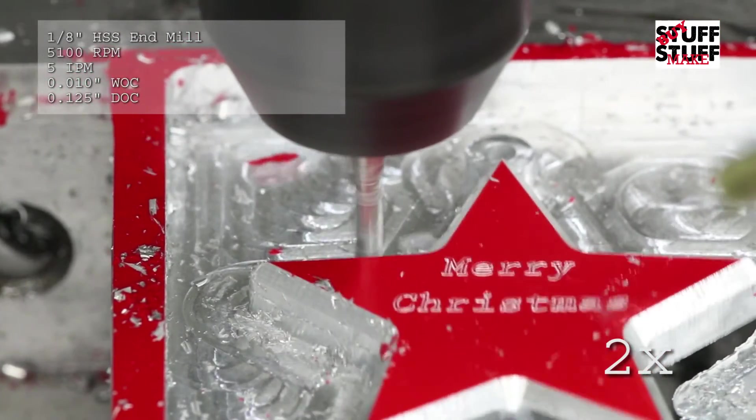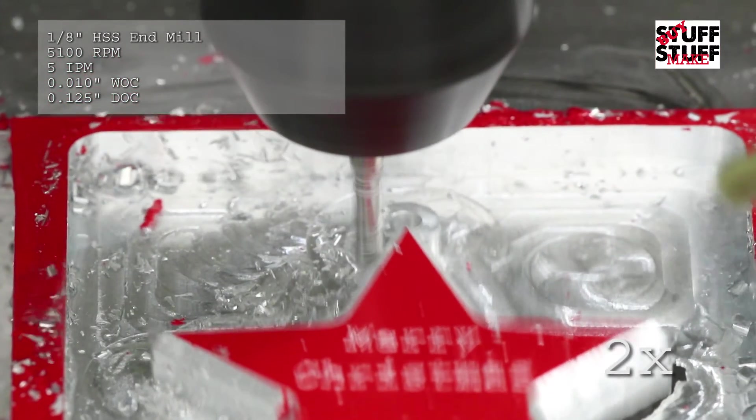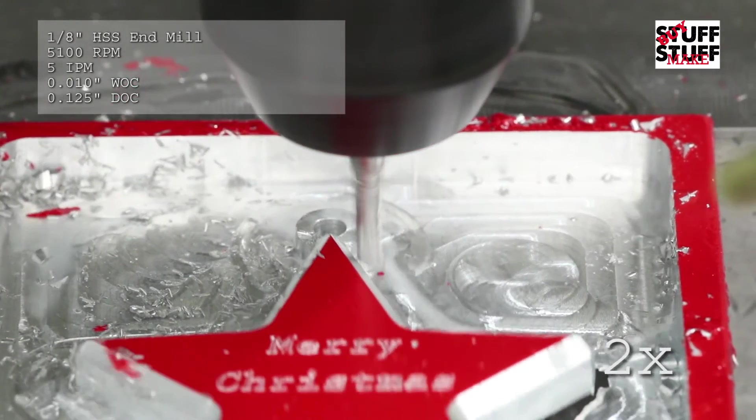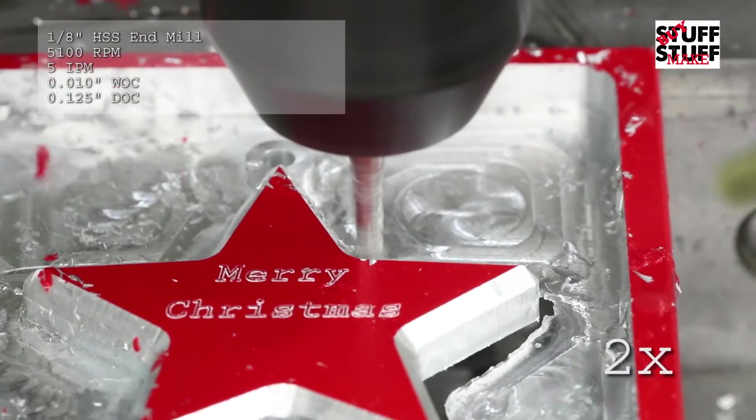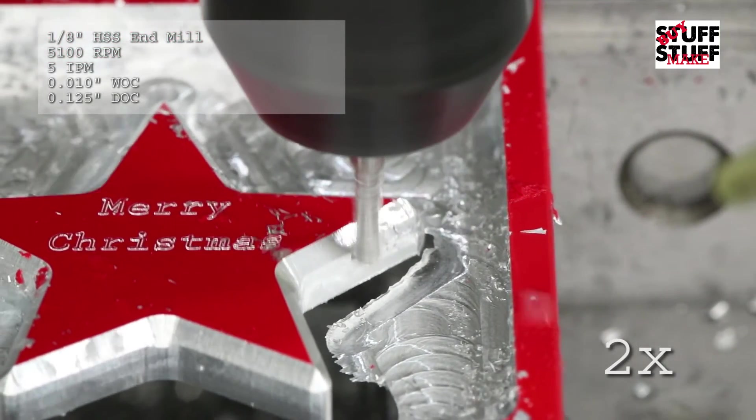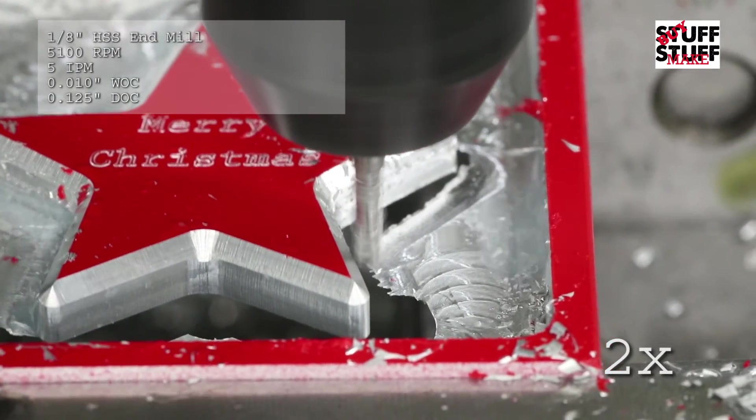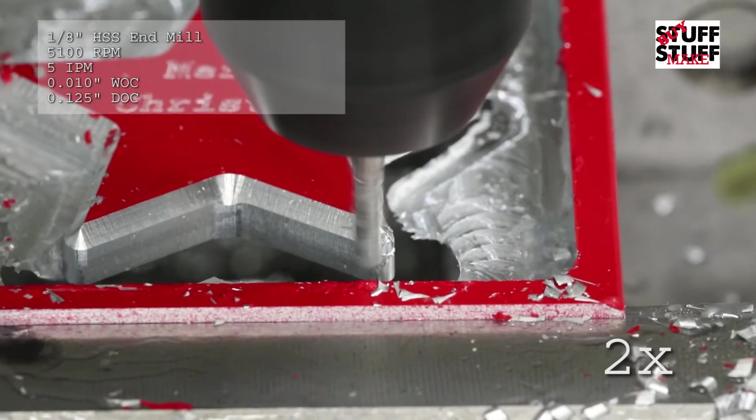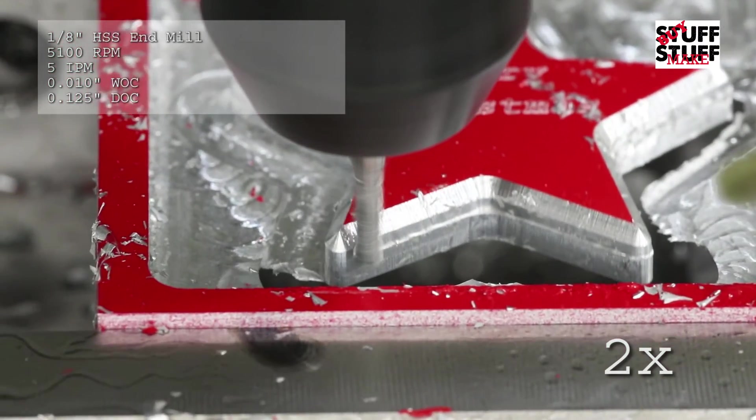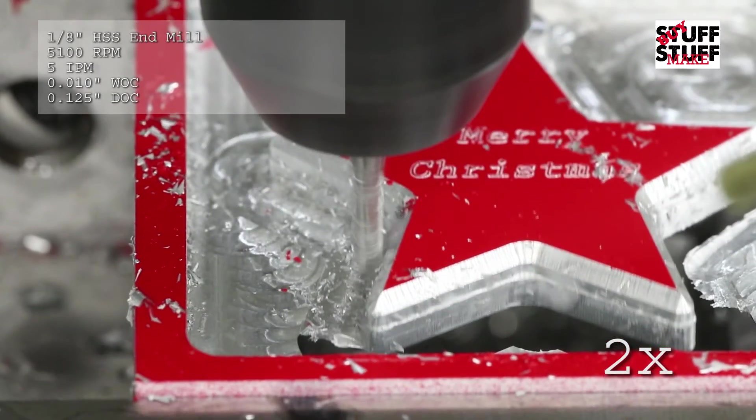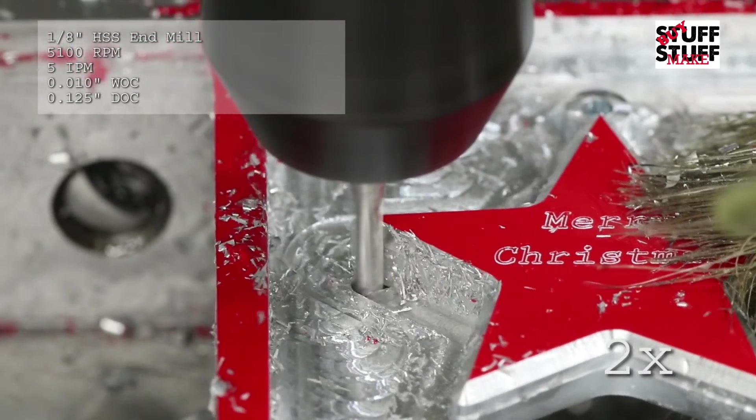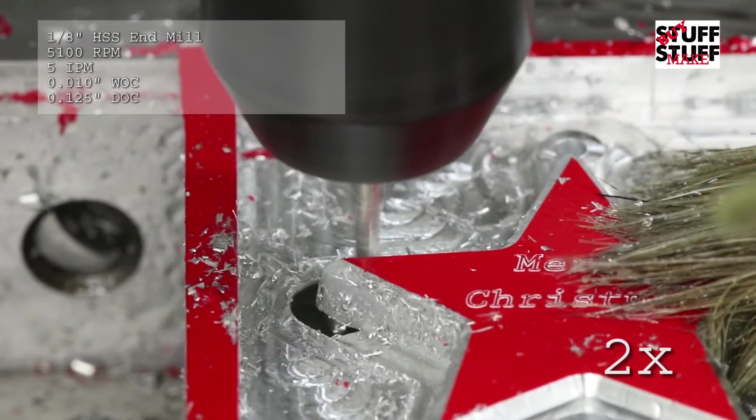And what I end up doing is getting a chip brush and just kind of keeping some pressure, a little bit of pressure on the part itself. And that held it really well actually. This vibration on this first pass left a little bit of marking on there, but not too bad. Not enough to redo it.